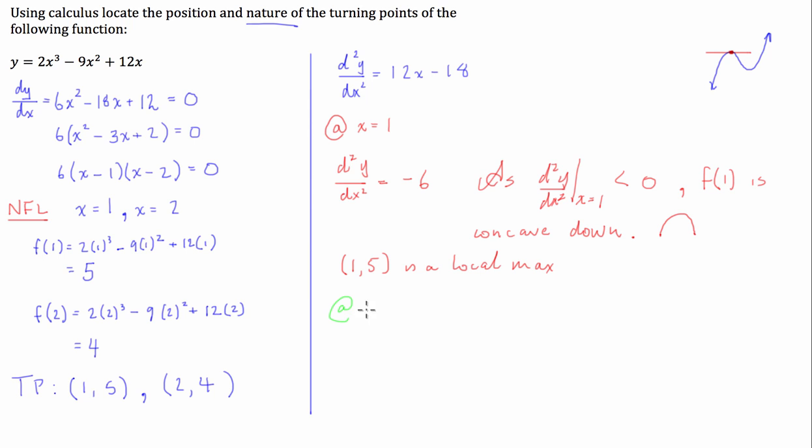We can go d²y/dx² is equal to, well, let's chuck it in here, 12 times 2 is 24, take 18 is 6. So again, we can write as the double derivative evaluated when x is equal to 2 is greater than 0.